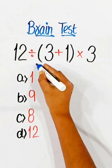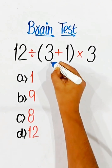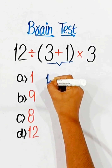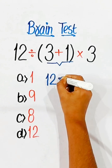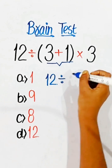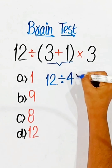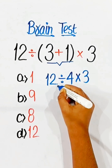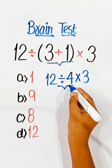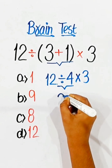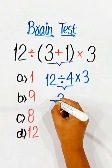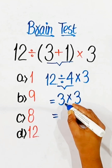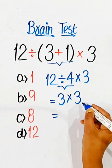Now it's time to solve this equation. First of all, we have to solve this bracket. So we can write 12 divided by 4 into 3, and division comes first. So 12 divided by 4 equals 3 into 3, and 3 multiplied by 3 equals 9.